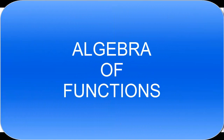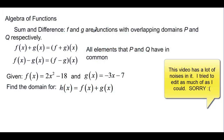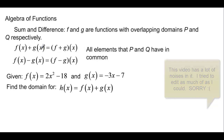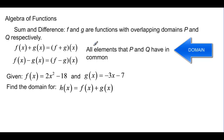This video is going to talk about the algebra of functions. We have sum and difference to talk about first. So we're going to have two functions with overlapping domains, and we're going to call them p and q. If I add the two functions, I can rewrite it as f plus g of x — just one function. Or if I subtract, I can write it as f minus g of x. The domain is all elements that p and q have in common.